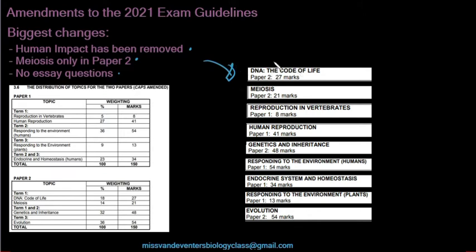Let's look at the mark changes. DNA stays the same at 27 marks. Meiosis, which was split between paper one and paper two, is now 21 marks in paper two. Reproduction in invertebrates has gone up by two marks to 8 marks. Human reproduction has gone up by 10 marks to 41 marks. Genetics and inheritance has gone up by three marks from 45 to 48.